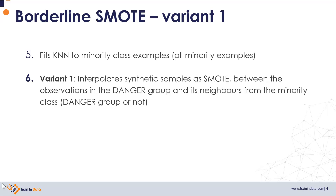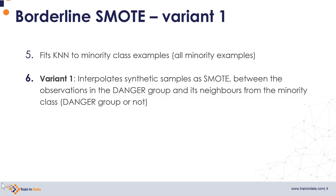There are two variants. The first variant fits a different KNN algorithm utilizing all observations from the minority class, and then interpolates synthetic data just as standard SMOTE. This interpolation occurs only between observations from the danger group — those surrounded mostly by neighbors from the opposite class — and their neighbors from the minority class.